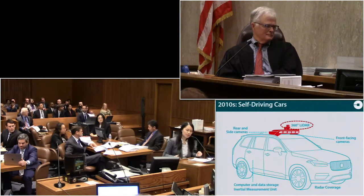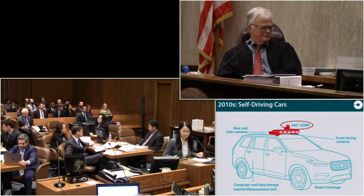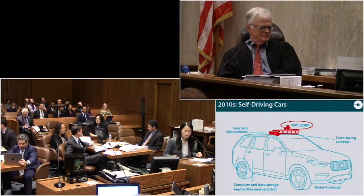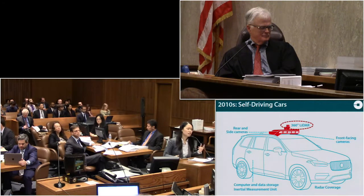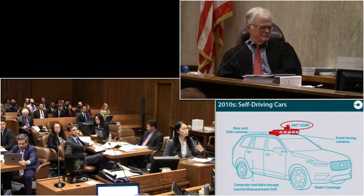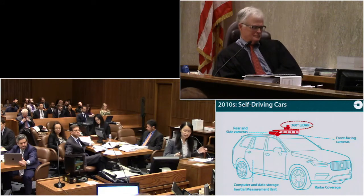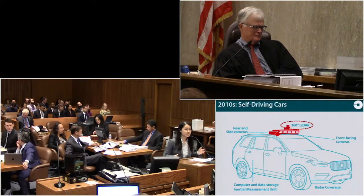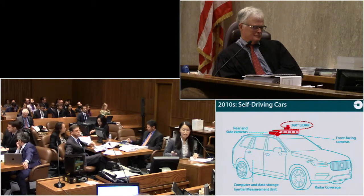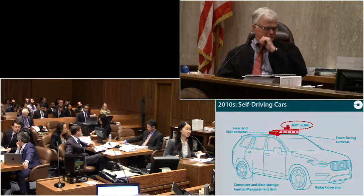In the modern self-driving car, a variety of sensing options are used. Marked in red is a 360-degree spinning LiDAR. But there are also front-facing cameras, rear and side cameras, radar coverage, and an inertial measurement unit because the car is being jolted — the IMU measures the pitch and adjusts the data to account for this shaking and jolting. Of course, you need significant computer and data storage capabilities to handle processing all this data. With that, the presentation passes to my colleague.